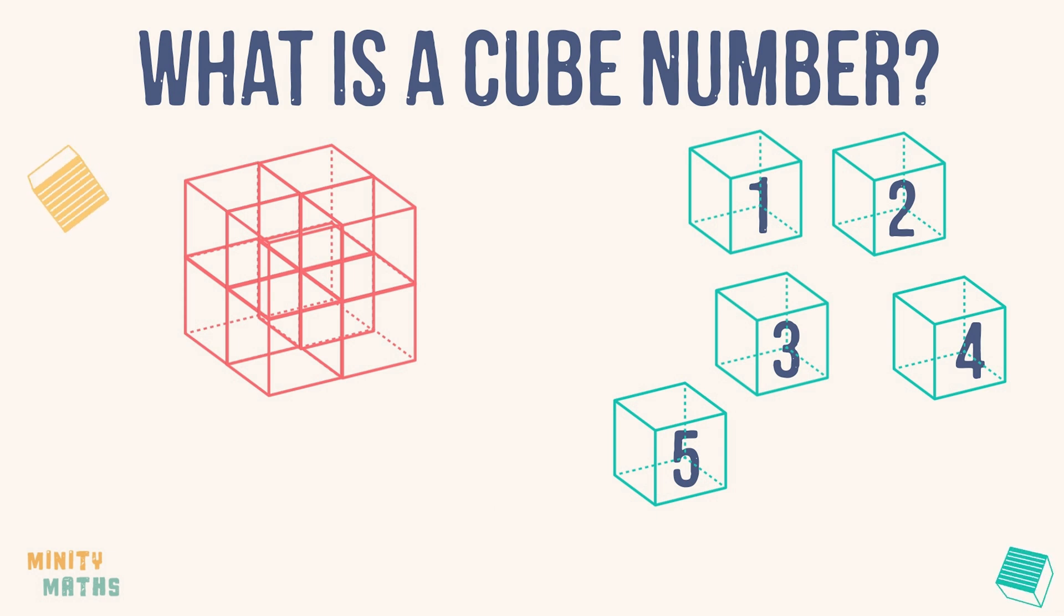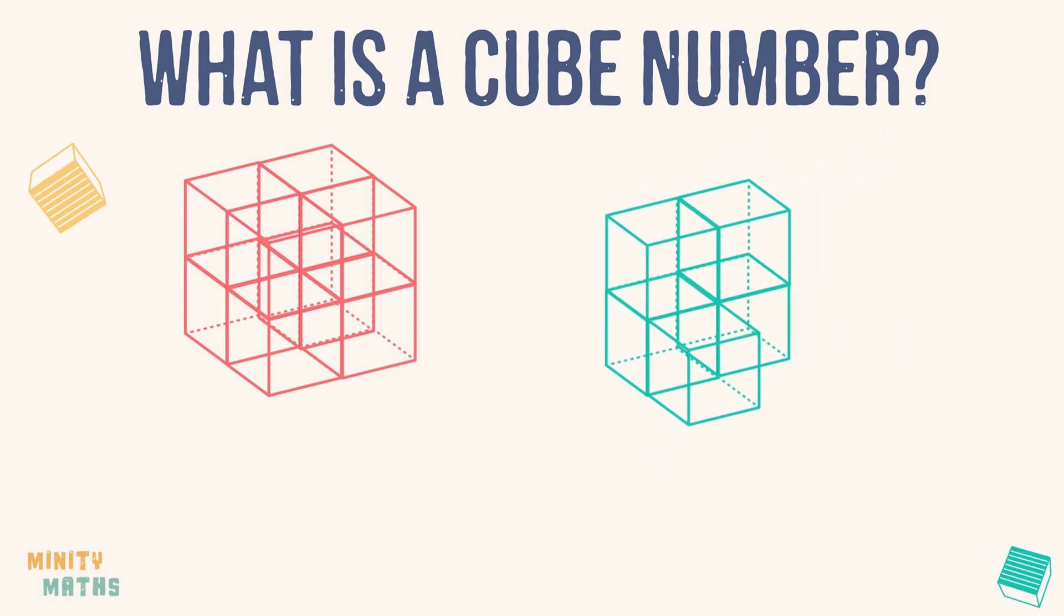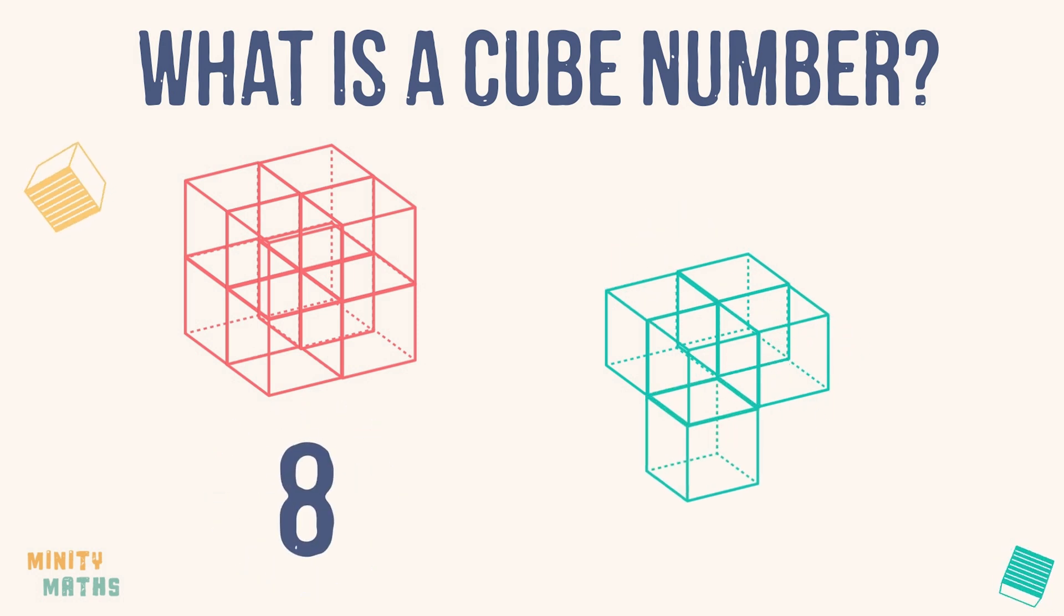However, we cannot make a larger cube out of 5 smaller cubes, no matter how many times we rearrange them. So 8 is a cube number and 5 is not a cube number.